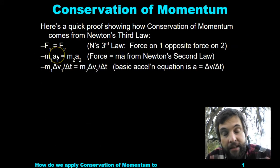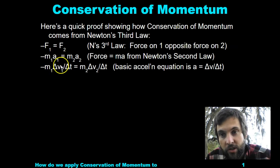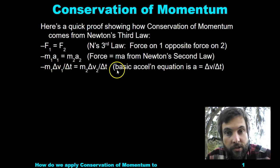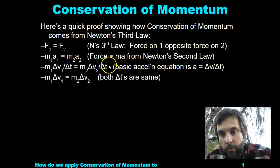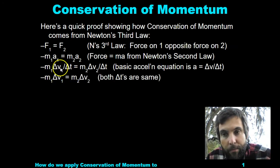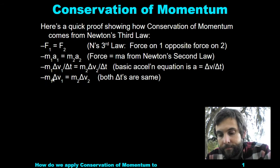Remember that A is the change in velocity over the change in time. We get M times delta V by multiplying time on each side.